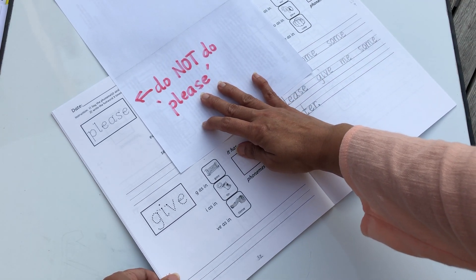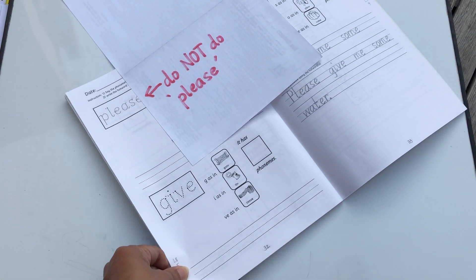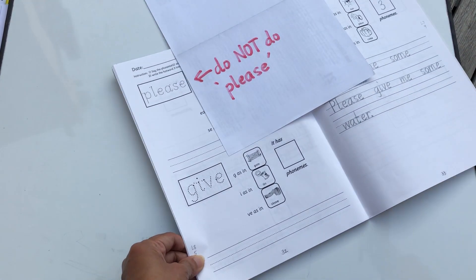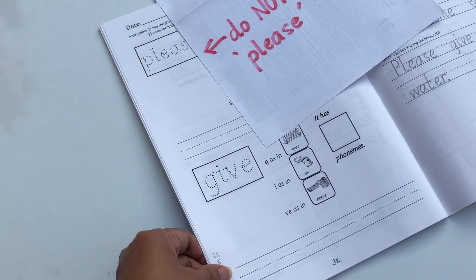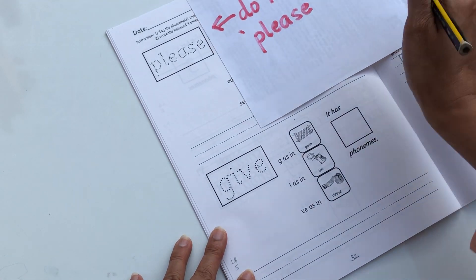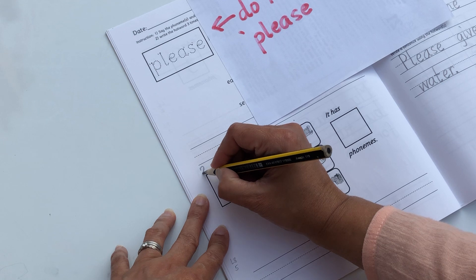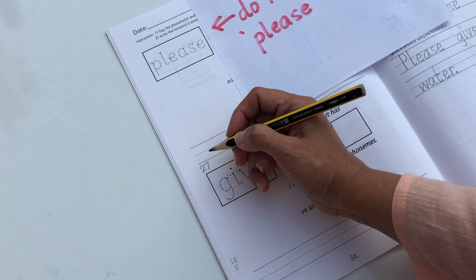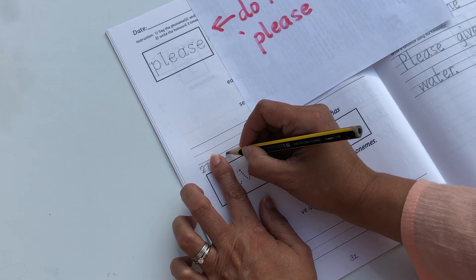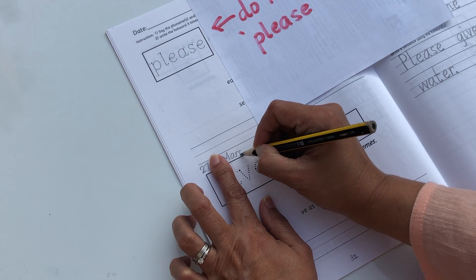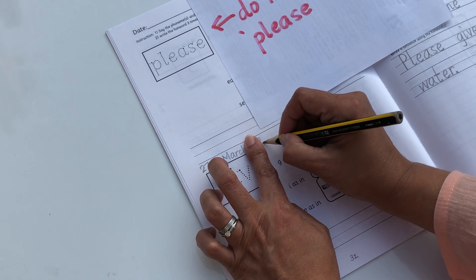Write the date here on top. Hold on a second. Yes, do not do please, okay? Today's date is 27th, finger space, March 2020.